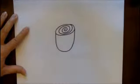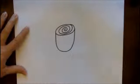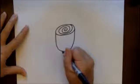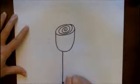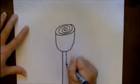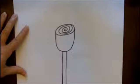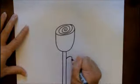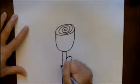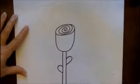After that, you'll want to come down with a straight line for the stem, and you'll want to put some little leaves onto your stem.